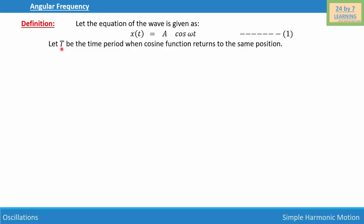simply means that there is only one way the cosine function can return to its same position: if T is the periodicity of that cosine function. If that is the case, we can write x(t) = A cos ω(t + T), and let this be our equation number 2.